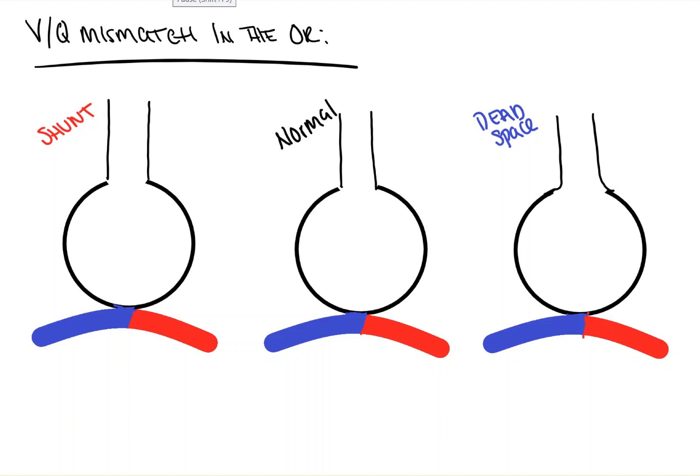Hi everyone, in this video from Count Backwards from 10, we're going to take a look at VQ mismatch in the operating room. Obviously this applies to outside the operating room as well, but some of you are going to be anesthesiologists or are anesthesiologists, and it's good to have a solid understanding of this as it's going to relate to a lot of the pathologies that we're going to talk about in our pathology video section.